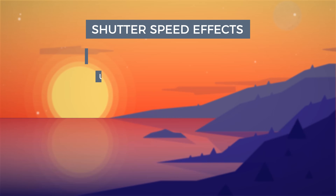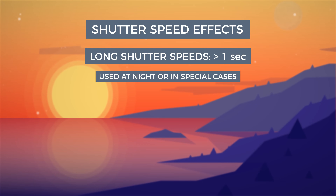Night photography will often utilize longer shutter speeds to capture as much light as possible. Shutter speeds as long as 20 or 30 seconds may even be used to take pictures of the Milky Way.